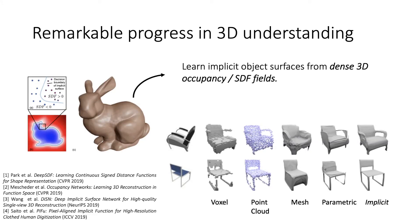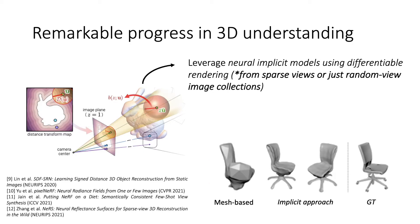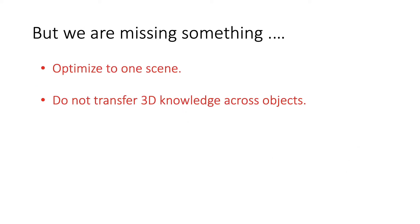Now let's first review the prior works. Recently, there has been remarkable progress in 3D reconstruction, specially credited to the rise of neural implicit modeling. With advancement in differentiable rendering, we now have learning systems which can learn dense high-fidelity 3D just from multi-view camera images. Furthermore, there has been remarkable progress in reducing the requirement of dense multi-view camera data from hundreds of images to just single-view image collections. But these approaches generally optimize to one scene and do not provide an easy way to transfer 3D knowledge across different objects.